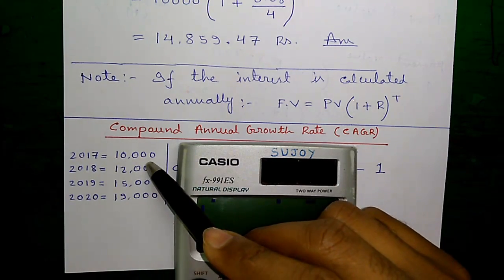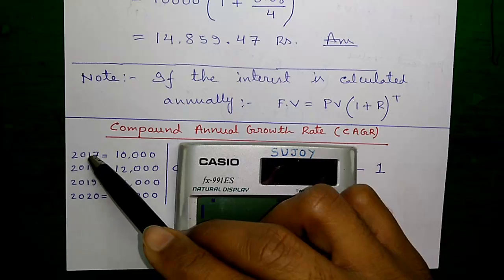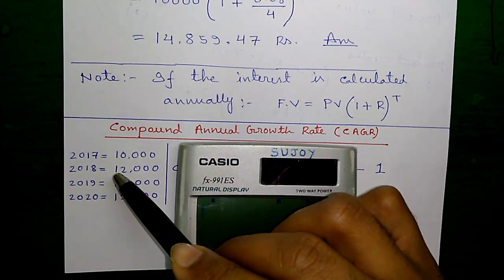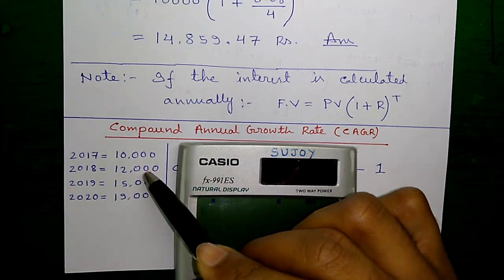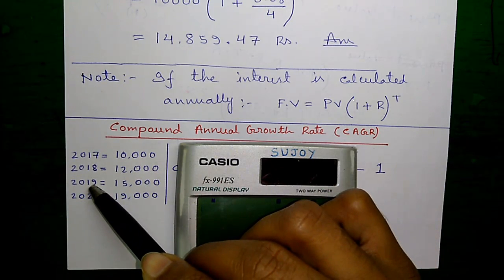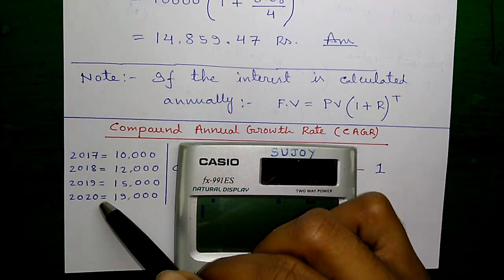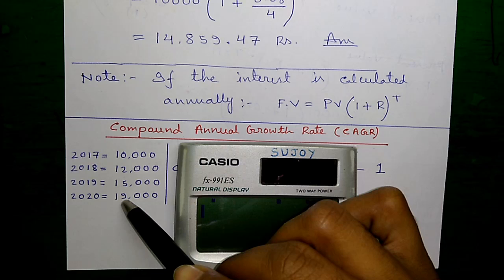Let's say you have invested $10,000 in a company portfolio in the year 2017. In year 2018, value of investment increased to $12,000. In year 2019, the value of investment is $15,000. In the year 2020, the value of investment is $19,000.